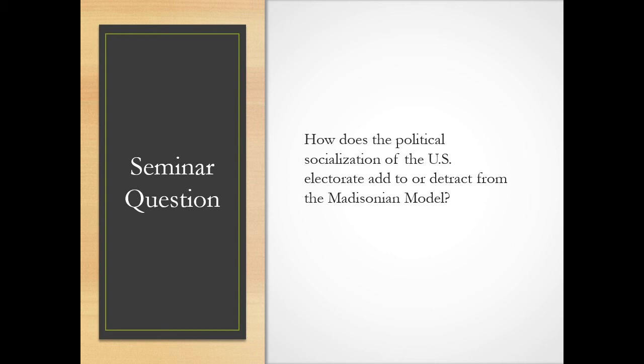Your first task is to define the Madisonian model — remember, your reader knows nothing. You know the Madisonian model backwards and forwards, but your reader doesn't. So in paragraph two, define the Madisonian model. Paragraph three, define political socialization. Paragraph four, define the U.S. electorate — and that's a big part of what we're doing tonight. By the time you come out of tonight's class, you'll be able to do this essay with one hand tied behind your back.